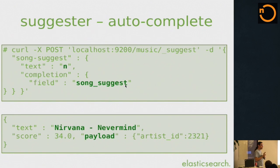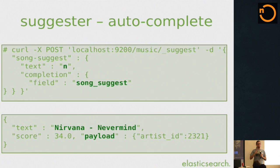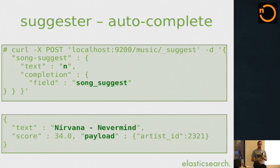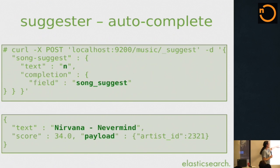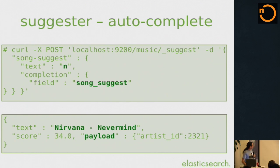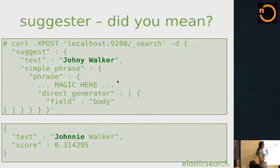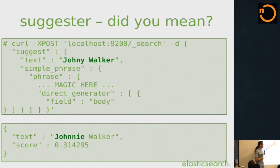Then we have two Suggestors, which are different from search. One is for autocomplete and one for spell checking. Suggestors are fast — if we don't do 10,000 queries per second on a single machine, we're doing it wrong. For autocomplete, you define a Suggestor and do partial input with optional payload. For spell checking, we have a phrase Suggestor that's context-aware and gives spelling suggestions based on the context from your own data.